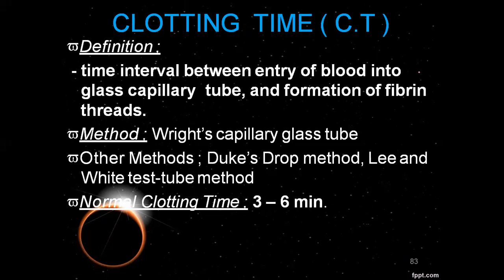For clotting time, we talk about the time interval between blood entering a glass capillary tube and the formation of a fibrin thread. The Wright capillary glass tube is used in this method, along with the Duke drop method. Blood is drawn into the capillary tube and within 3 to 6 minutes, if a clot forms, it is considered normal. If it exceeds 6 minutes, we consider hemophilic conditions, and treatment with coagulants may be required.